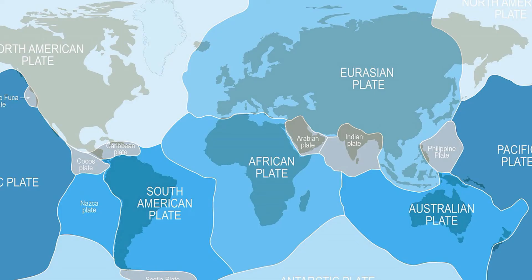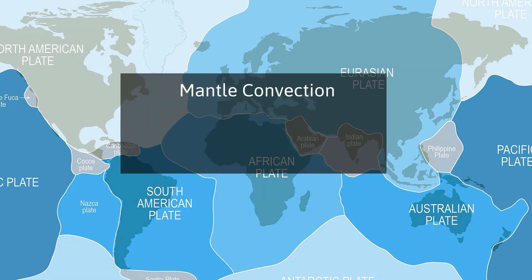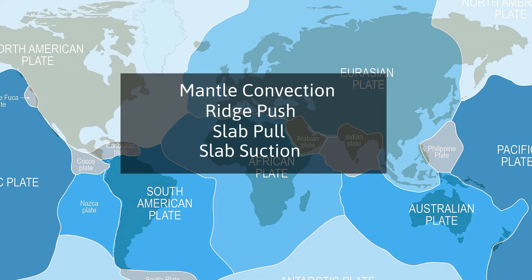These four mechanisms include mantle convection, ridge push, slab pull, and slab suction.